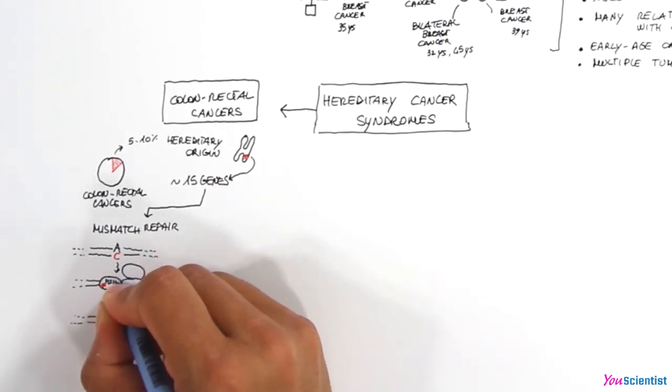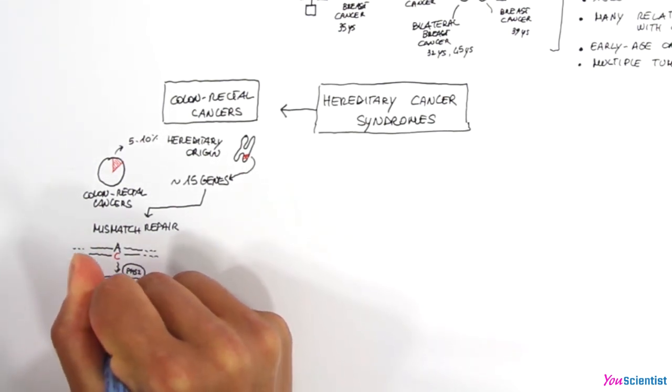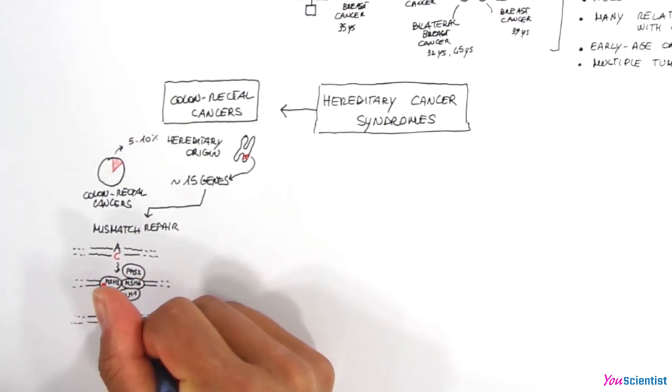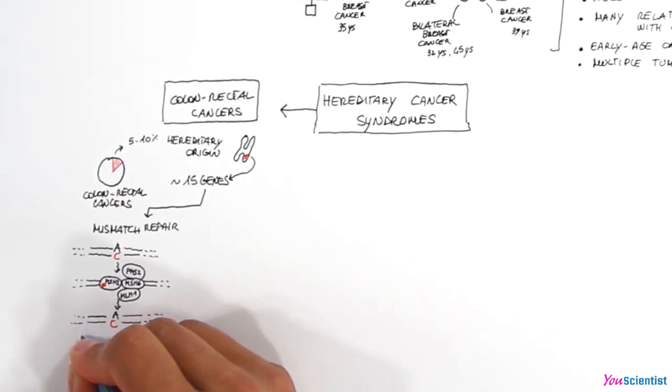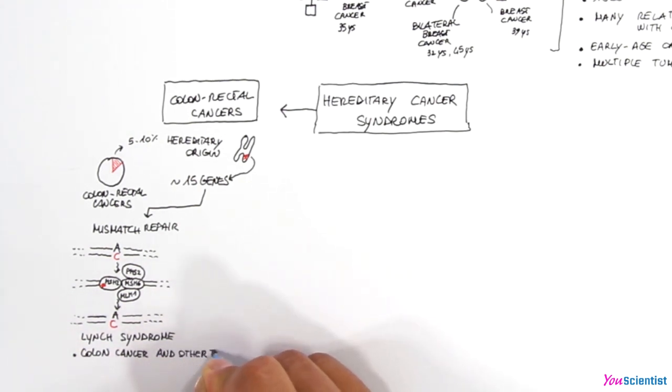If a person inherits a mutation in a gene involved in the mismatch repair system, the mismatch repair will not work properly and errors will accumulate within the DNA sequence. Mutations in genes involved in mismatch repair are linked to the Lynch syndrome, which is characterized by an increased risk of colorectal cancers and other types of tumors, such as endometrial cancers.